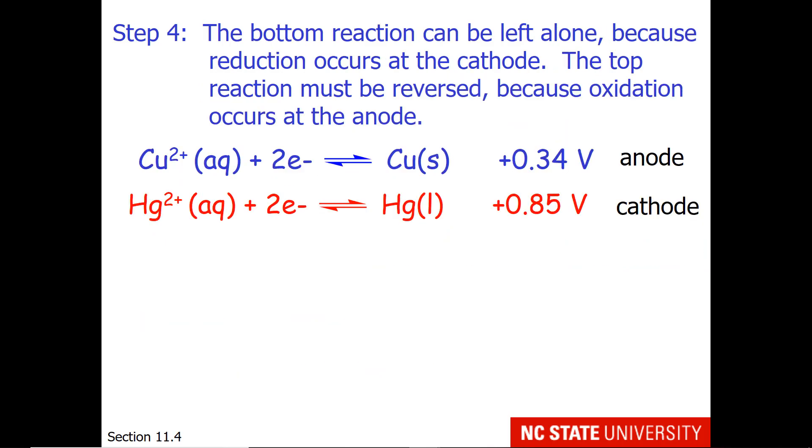Now as far as understanding which way the reactions go, the bottom reaction can be left alone because reduction occurs at the cathode. And we did, after all, get these reactions from the reduction potential table. So they come as reductions. The top reaction, however, has to be reversed because oxidation occurs at the anode.